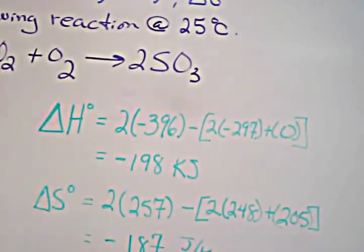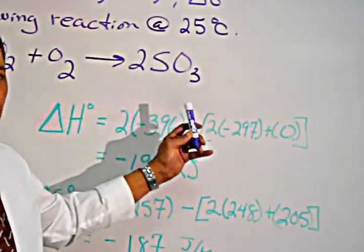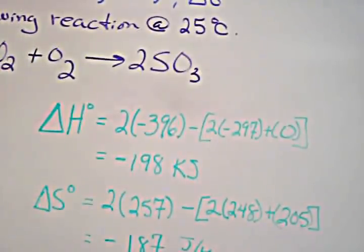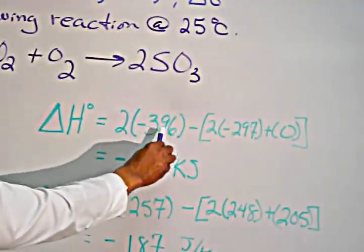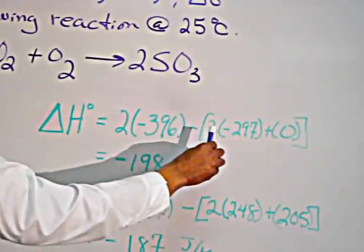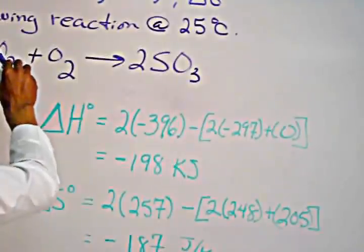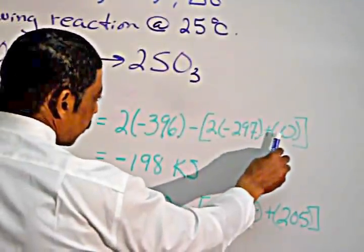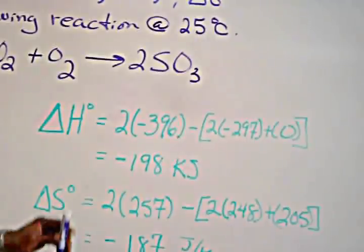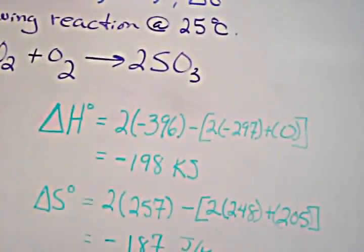To calculate the delta H, we must take the sum of the heat of formation of the products and subtract from that the sum of the heat of formation of the reactants. In this case, 2 times negative 396, which is the heat of formation of sulfur trioxide, minus 2 times negative 297, which is the heat of formation of sulfur dioxide, plus zero for the element oxygen. The answer will be negative 198 kilojoules, which represents the delta H.